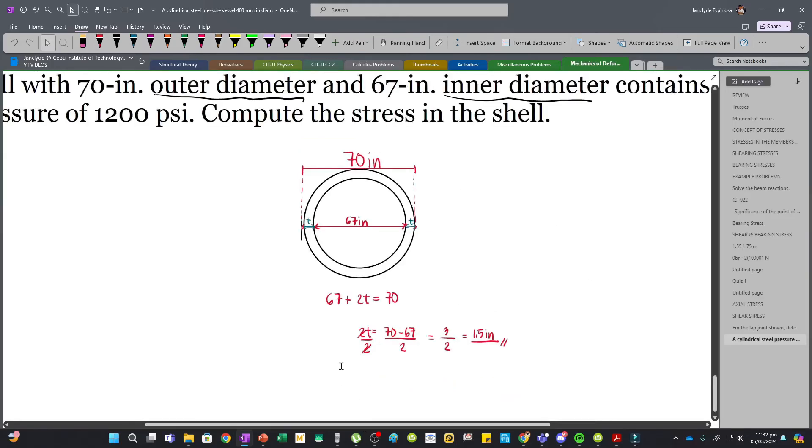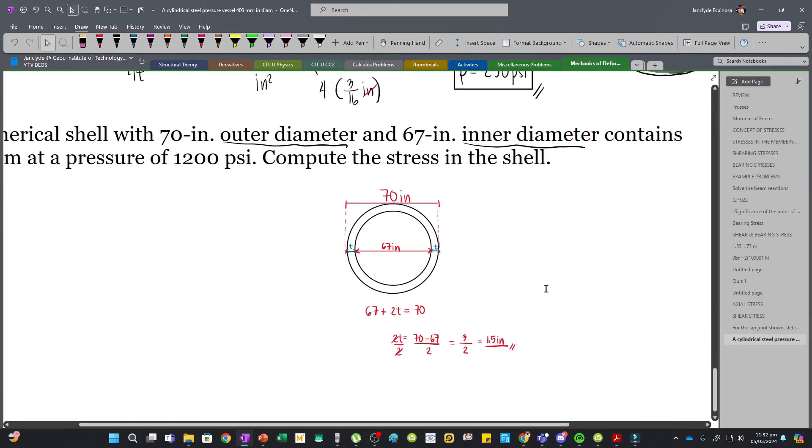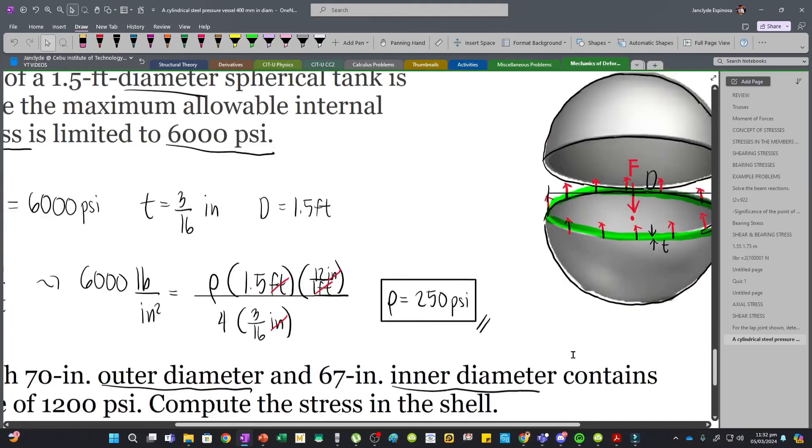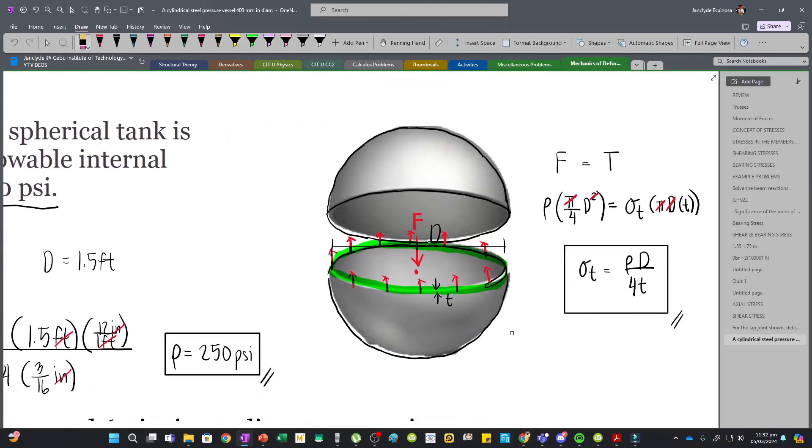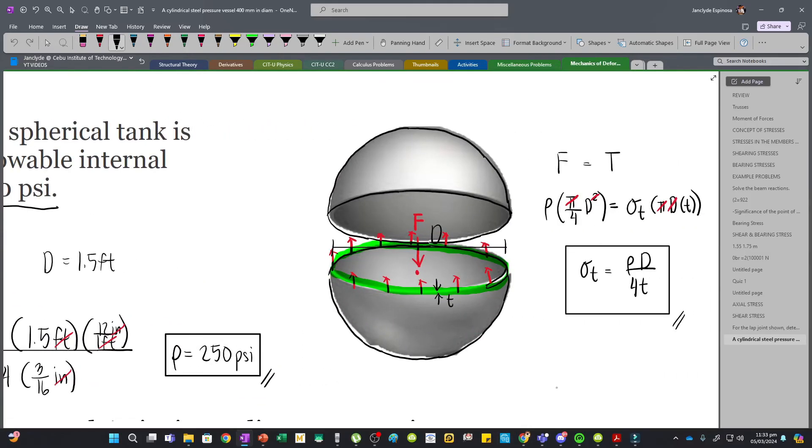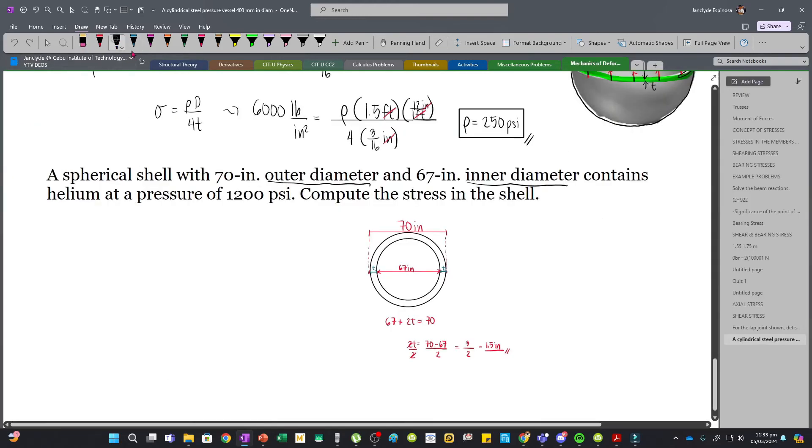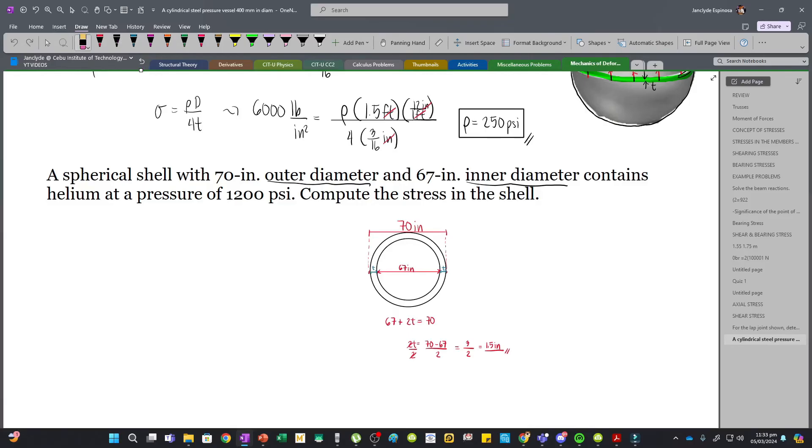The next question will be what diameter are we going to use. Recall that in the derivation of our formulas, we are actually using the inner diameter. This is discussed in the very first video. Here, our internal pressure is 1200 psi caused by the helium. When we compute the stress in the shell, we will just use stress equals PD divided by 4T.